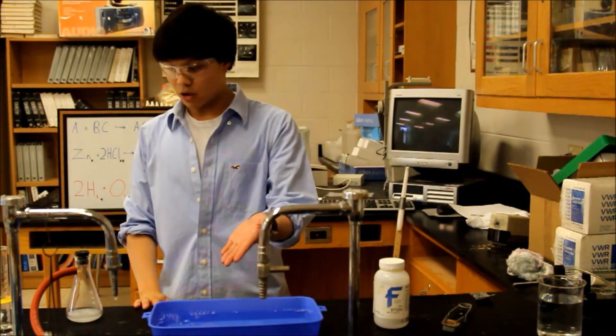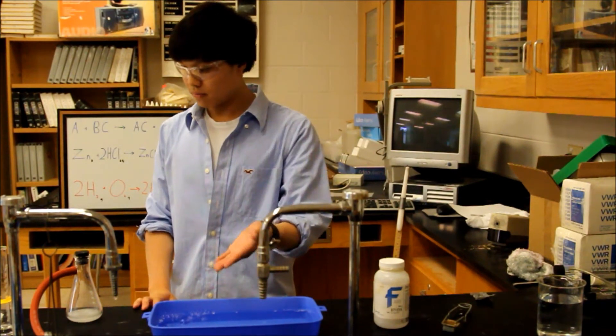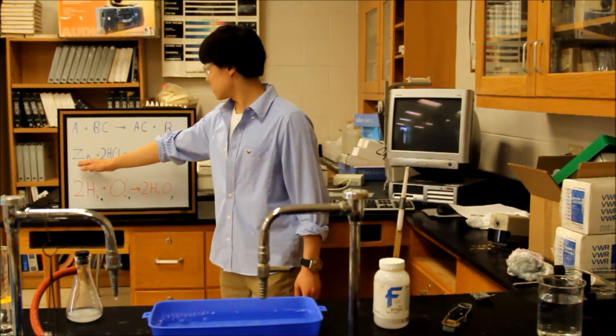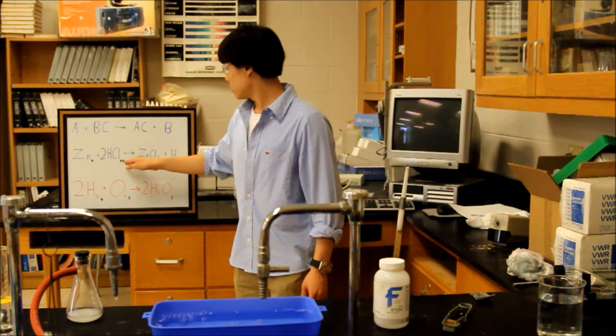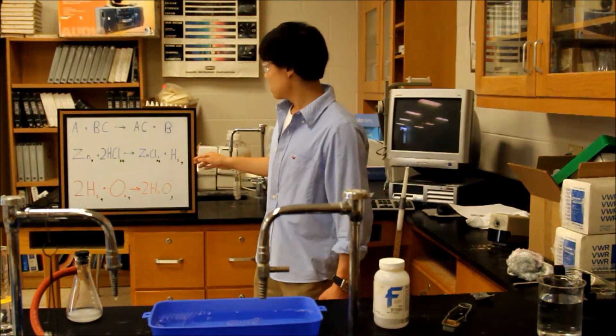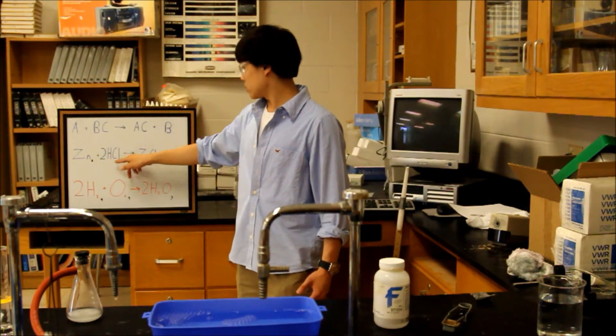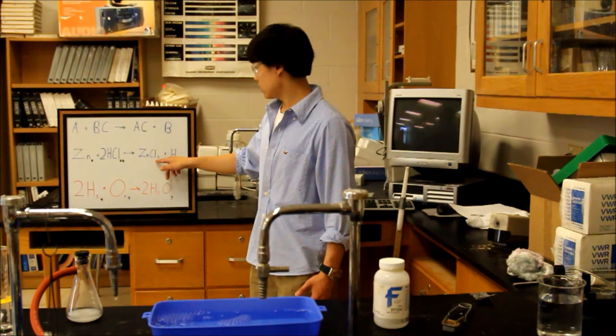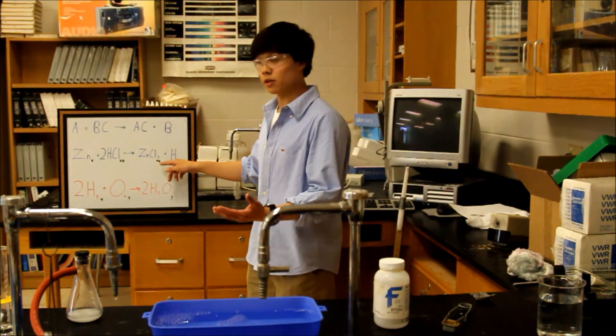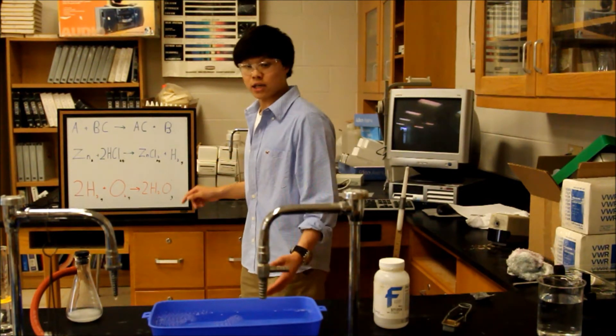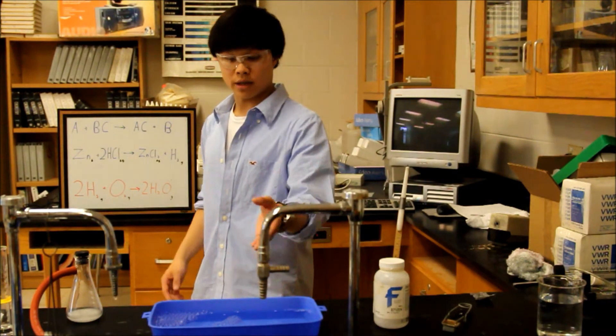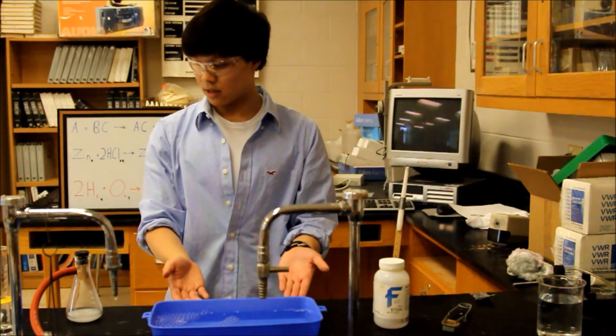As you can see, bubbles are produced in this reaction. The reaction that's proceeding is zinc plus 2HCl yields zinc chloride and hydrogen gas. Solid zinc and aqueous HCl produces aqueous zinc chloride, because of the solubility rules, as well as hydrogen gas, which is being bubbled through into this gas collection trough.